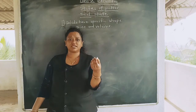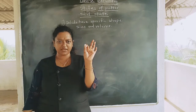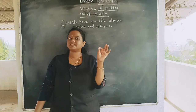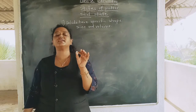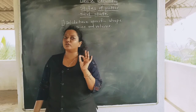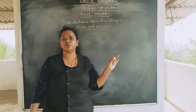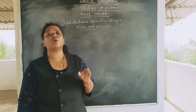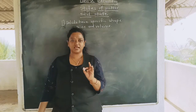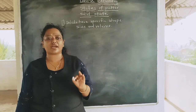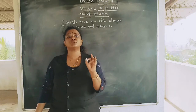Suppose this chalk or the pen you are using to write notes — does it have a specific shape? Yes, it has a cylindrical shape. If I keep it aside, is it going to change its shape? No. Is it going to change its size? No. All solid things around us have a specific shape, size, and volume.